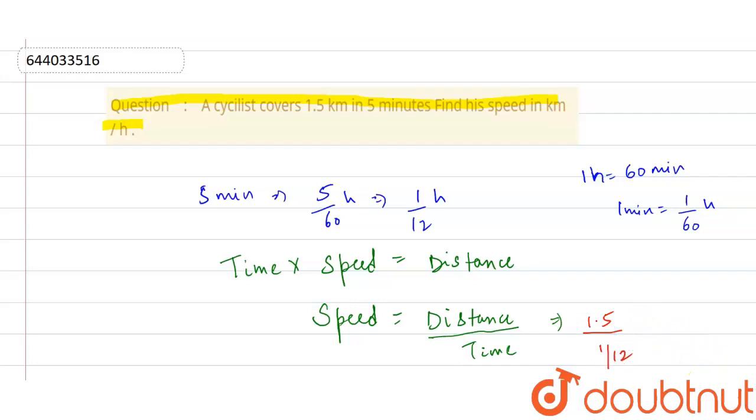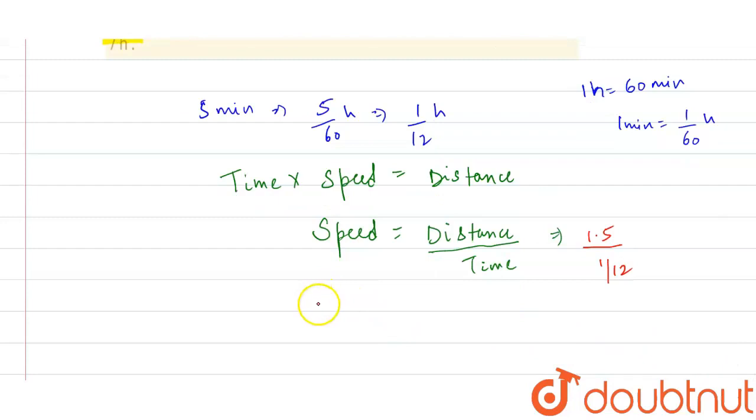Speed equals 1.5, which we can write as 15 by 10, multiplied by 12 by 1. We cut it by 5, so we get 3 and this will be 2, and again 2 with 12 we get 6.